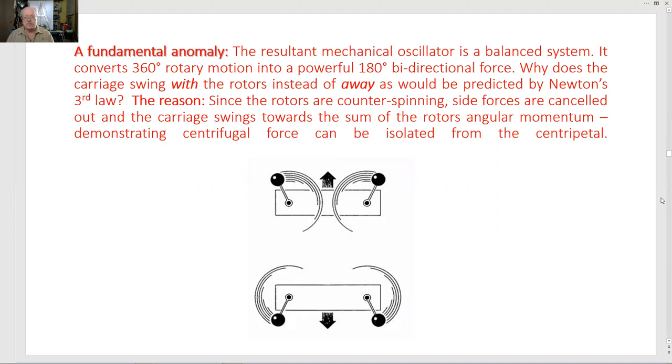The reason, since the rotors are counter spinning, side forces are canceled out and the carriage swings towards the sum of the rotor's angular momentum, demonstrating centrifugal force can be isolated from the centripetal.